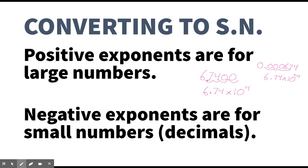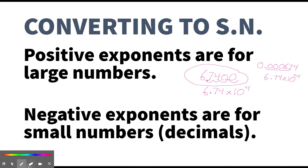There are lots of ways to think about this. The way I like to think about it is: positive exponents are for large numbers, and negative exponents are for small numbers. So if you have a large number like 67,400 — and by large I mean greater than one — just move the decimal, rewrite the coefficient, and use a positive exponent because it was a big number. If you have a very small number — less than one, a decimal — move the decimal, count how many places, rewrite the coefficient, and just use a negative exponent. Negative exponents are for small numbers, positive exponents are for big numbers.